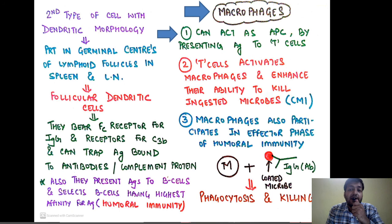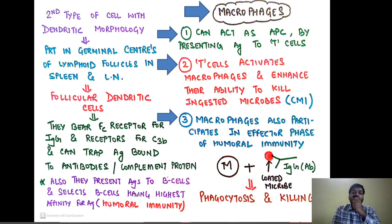Macrophages can also act as antigen presenting cells by presenting antigens to T cells. Once T cells are activated by macrophages, the T cells activate the macrophage and enhance its ability to kill ingested microbes — so macrophages have a role in cell mediated immunity. Macrophages also participate in the effector phase of humoral immunity: if a microbe has been coated by an antibody, the macrophage will cause phagocytosis and killing of that microbe.